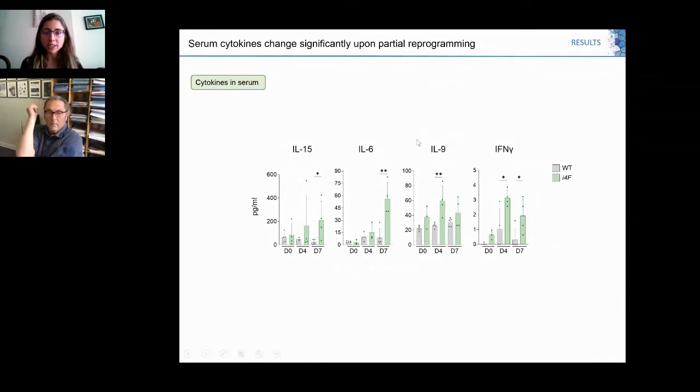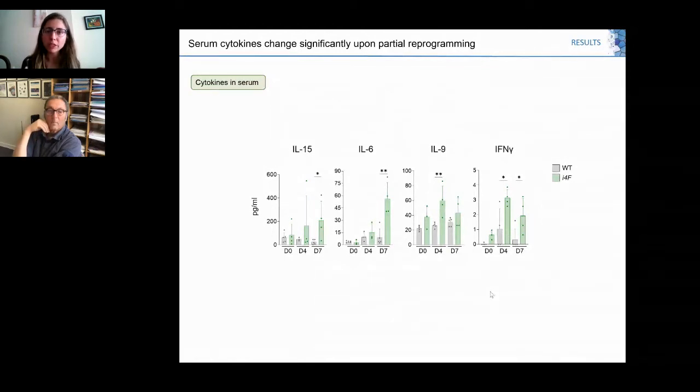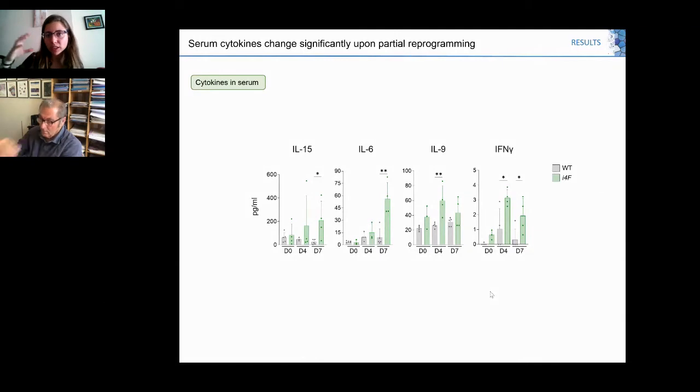We also saw increases in interleukin-9, mainly expressed by a subtype of T cells, and interferon-gamma, secreted by cytotoxic T cells and NK cells. We analyzed immune cell infiltration upon reprogramming and saw there was indeed an increase in immune infiltration in organs undergoing reprogramming. We mainly focused on NK cells, natural killer cells, as by doing RNA-seq we observed the most significant genes were those related to NK cytotoxicity.